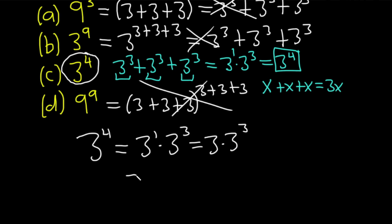And so you have three of these. So then it's 3 cubed plus 3 cubed plus 3 cubed. And so that's one way to do it.